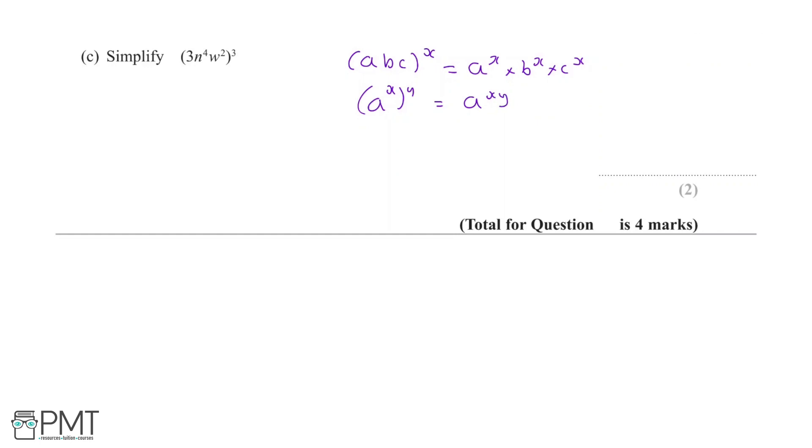So (3n⁴w²)³ becomes 3³ × (n⁴)³ × (w²)³. 3³ is 27.